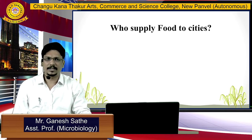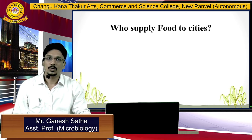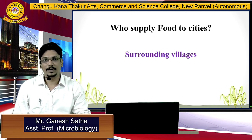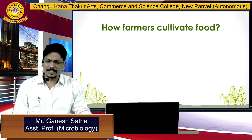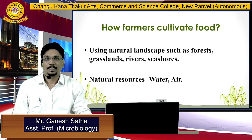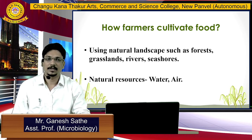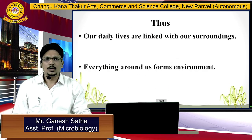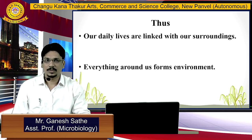The people who are living in cities or towns have their own needs. Who supplies food to these cities or towns? The answer is our surrounding villages. Villages have farmers who cultivate different crops, and for their cultivation they use natural resources and natural landscapes such as forests, grasslands, rivers, seashores, and water along with air. Using these, they fulfill the needs of cities, villages, and towns.